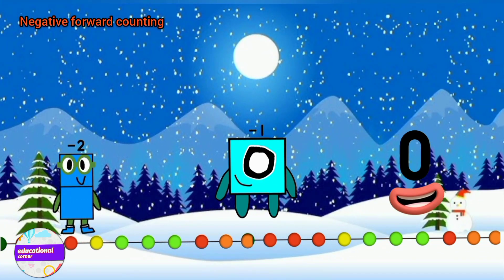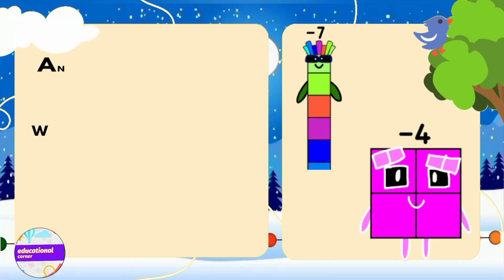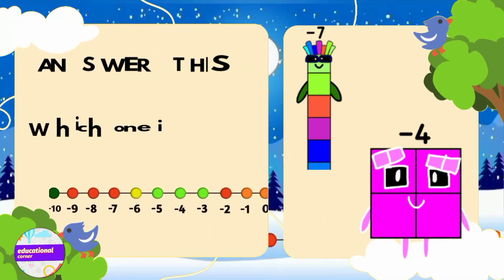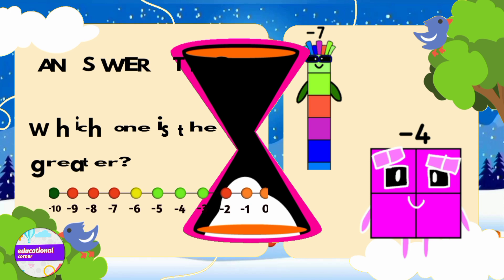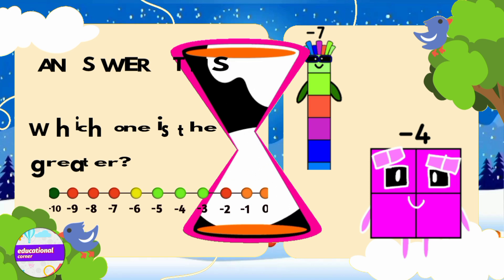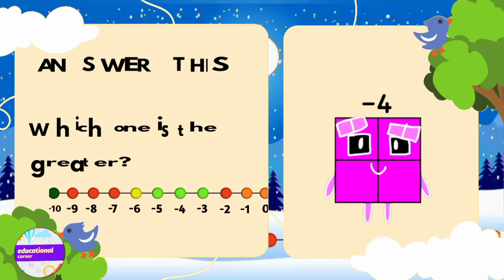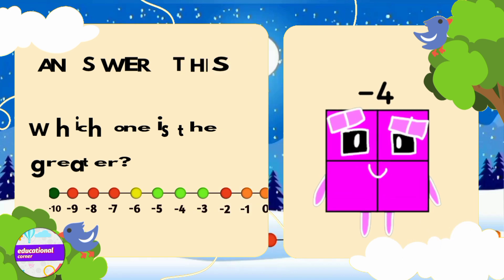We are all done. Which one is greater: minus seven or minus four? The number closer to the zero is larger.